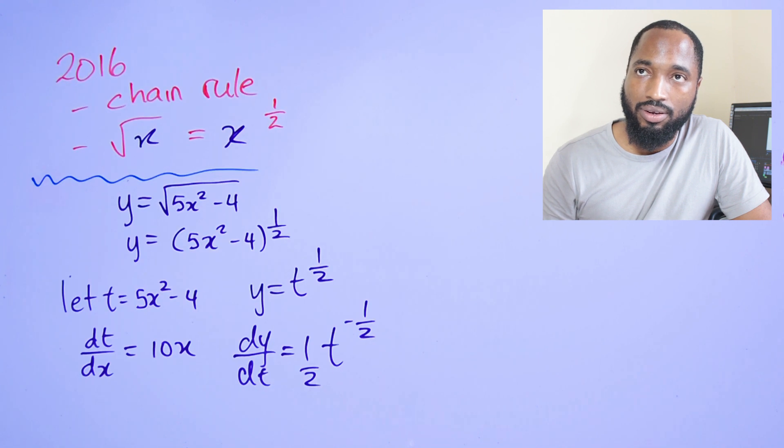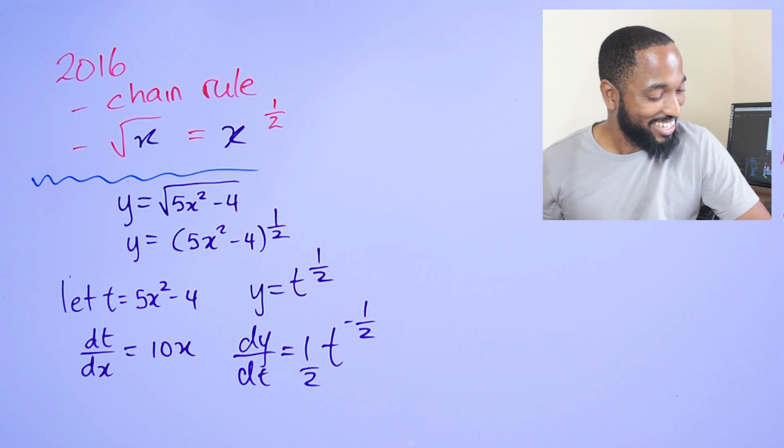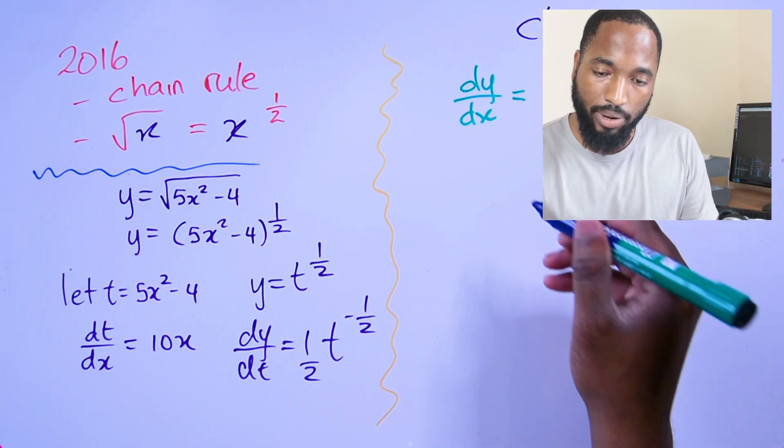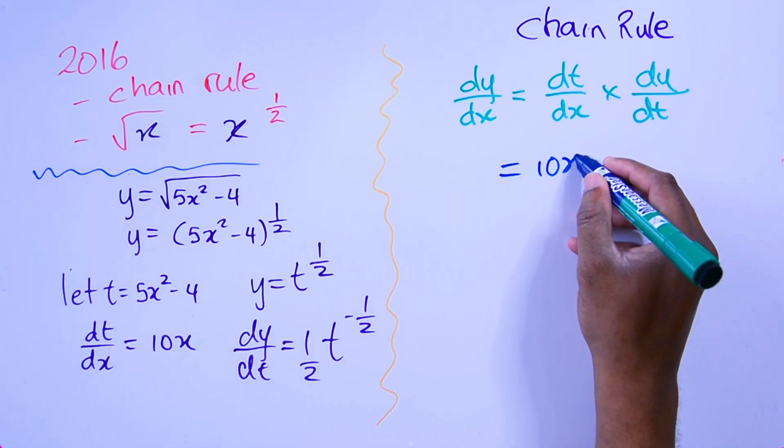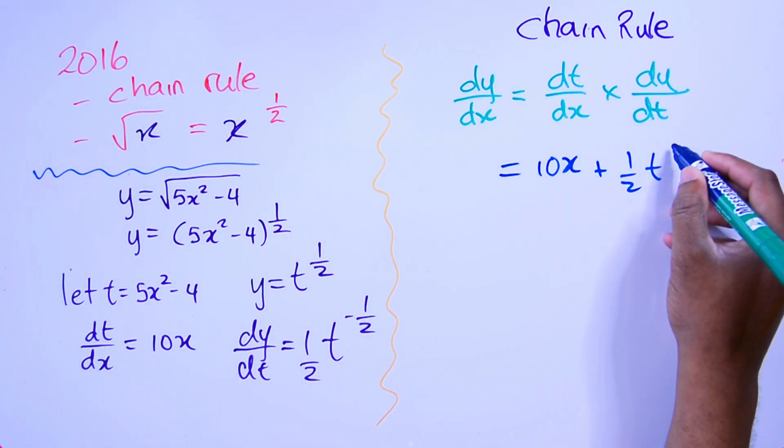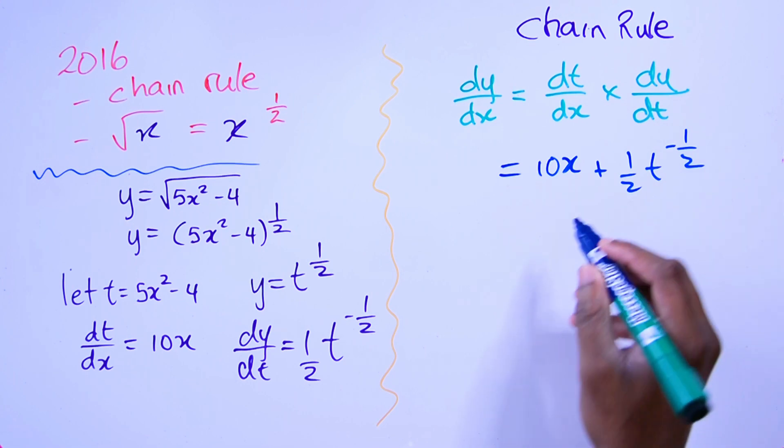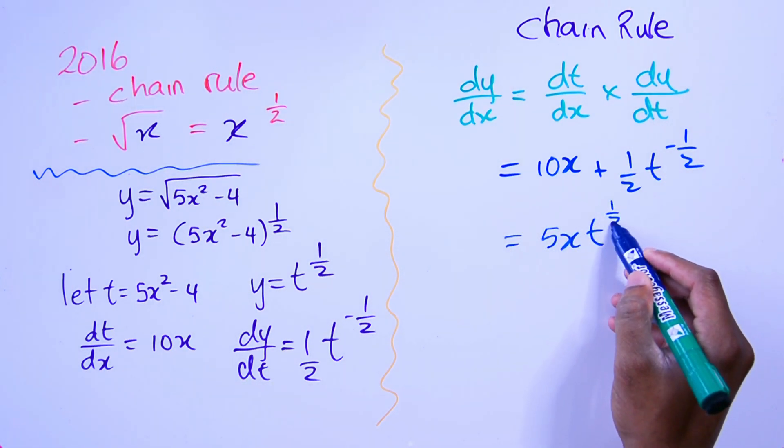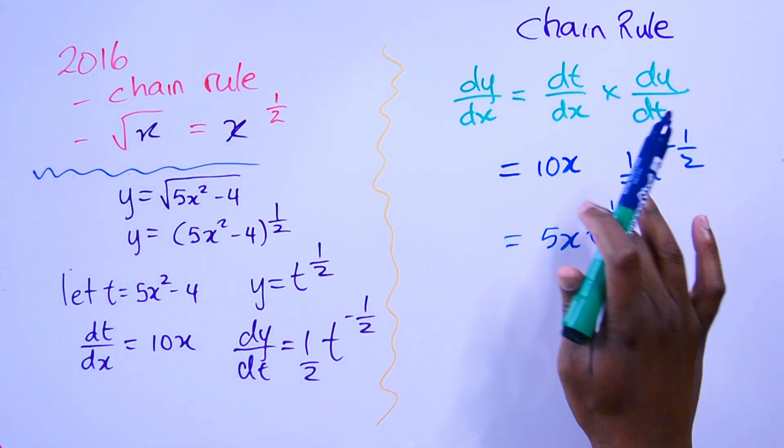Applying the chain rule is going to give us 10x times (1/2)t^(-1/2). We can break this down to 5x·t^(-1/2).